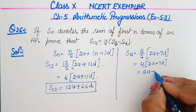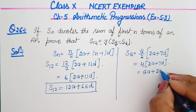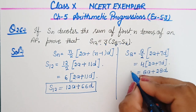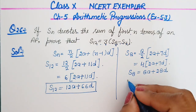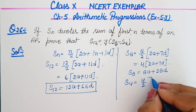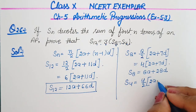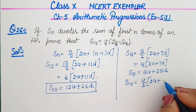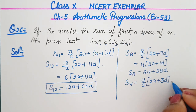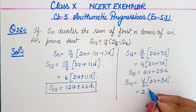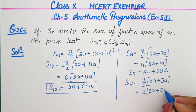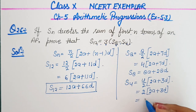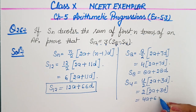We have the value of S8, and then the value of S4 is equal to 4 by 2 in the bracket 2A plus 4 minus 1, meaning 3D. So 4 upon 2 is equal to 2 in the bracket 2A plus 3D.